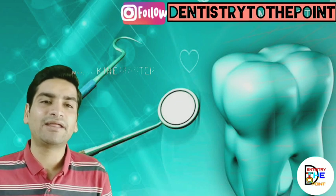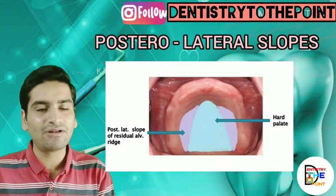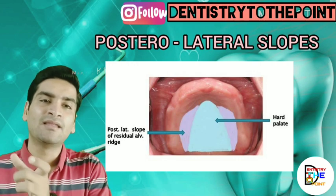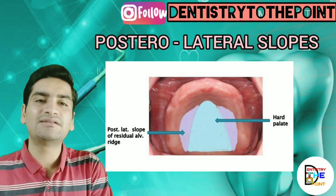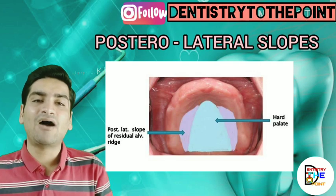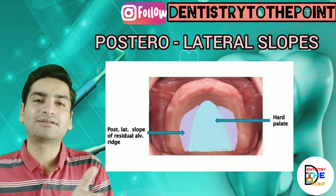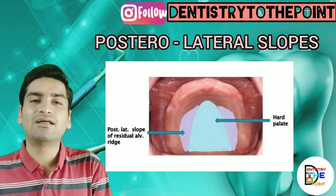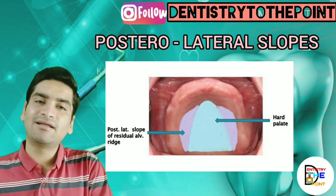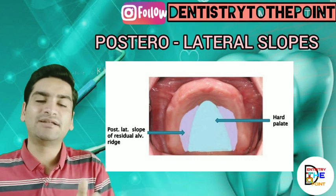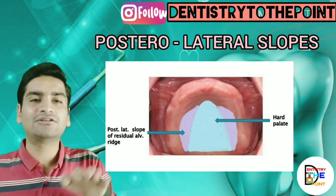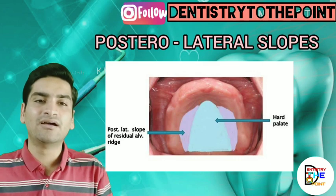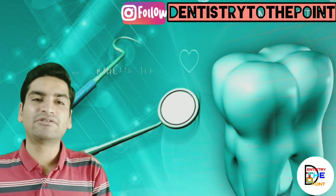The second primary supporting area is the posterior lateral slopes of the residual alveolar ridge. The residual alveolar ridge refers to the portion of the alveolar ridge and its soft tissue covering which remains after extraction. The posterior region of the ridge along with the lateral slopes — that is, the posterior lateral slopes of the ridge — are going to act as a primary stress bearing area for the denture.